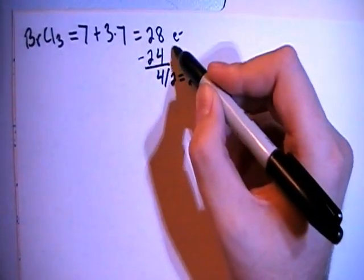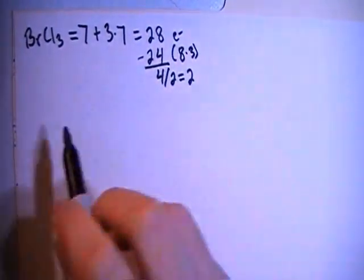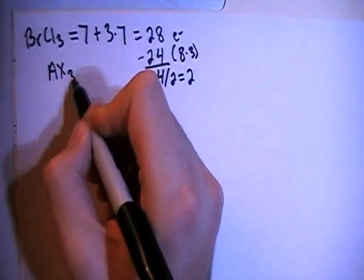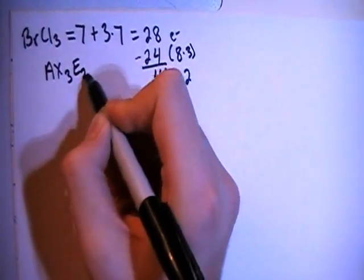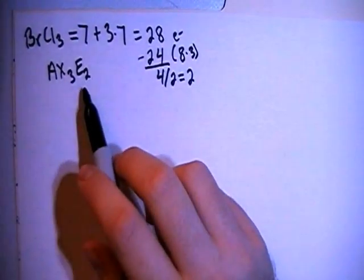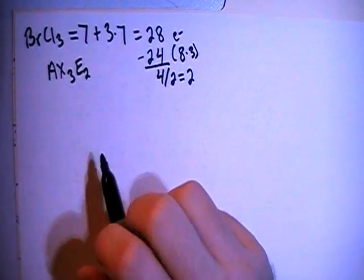And since 24 is equal to 8 times 3, that means that bromine trichloride is going to be an AX3E2 structure, meaning there's a central atom surrounded by 3 peripheral atoms with 2 non-binding pairs of electrons located on the central atom. Alright.